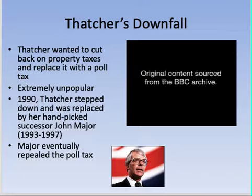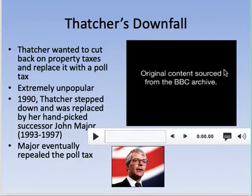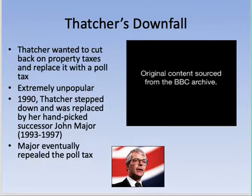Thatcher's downfall came when she wanted to cut property taxes and replace them with a poll tax, which was extremely unpopular — even within her own party. Because of this unpopularity, she decided to step down and was replaced by John Major, who served from 1993 to 1997 and repealed the poll tax. After her roughly 11 years, some of her policies had run their course.